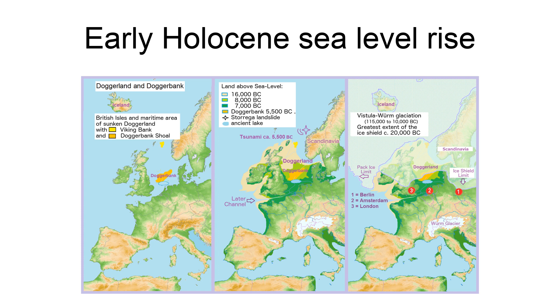At the onset of deglaciation about 19,000 years ago, a brief, at most 500-year-long, glacial eustatic event may have contributed as much as 10 m to sea level with an average rate of about 20 mm per year.